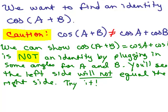So the goal: we want to find an identity for the cosine of A plus B. First of all, make sure you are clear that the cosine of A plus B is not equal to just the cosine of A plus the cosine of B. We could show that's not an identity by plugging in some angles for A and B. You could let A equal 0 degrees and B equal 60 degrees, and compute both sides of the equation — you should find they're not equal.